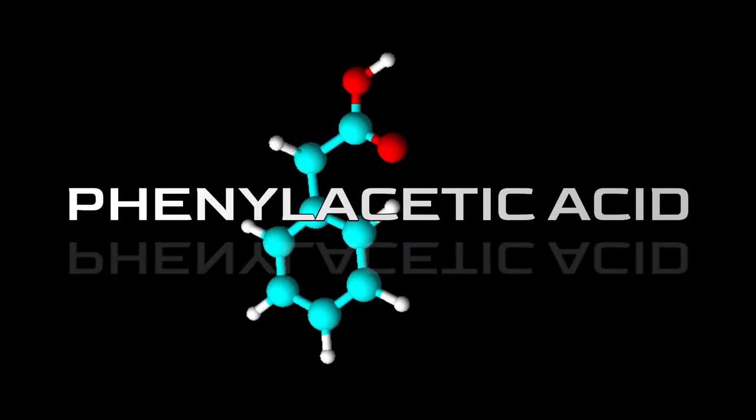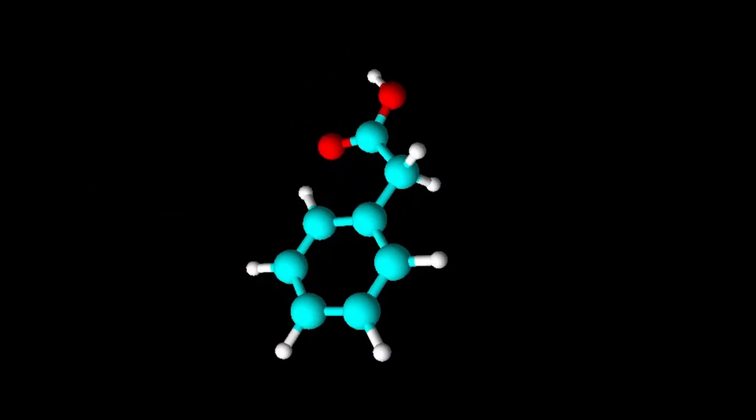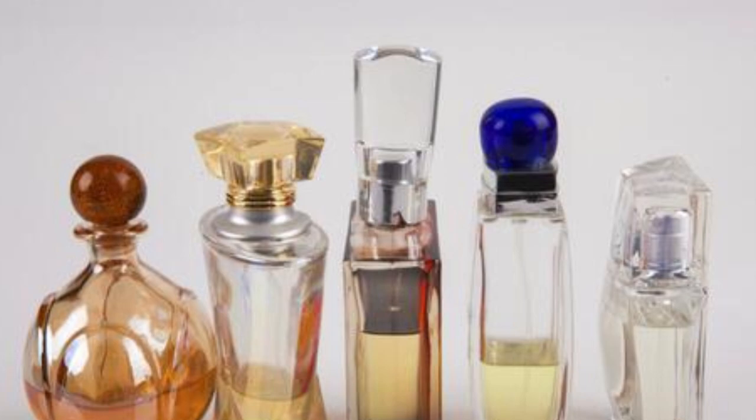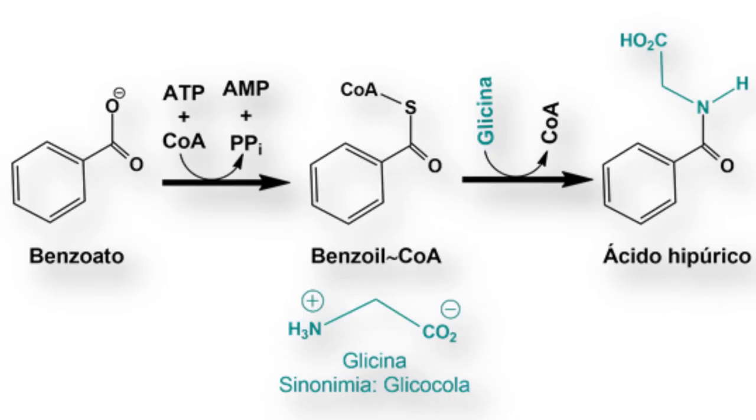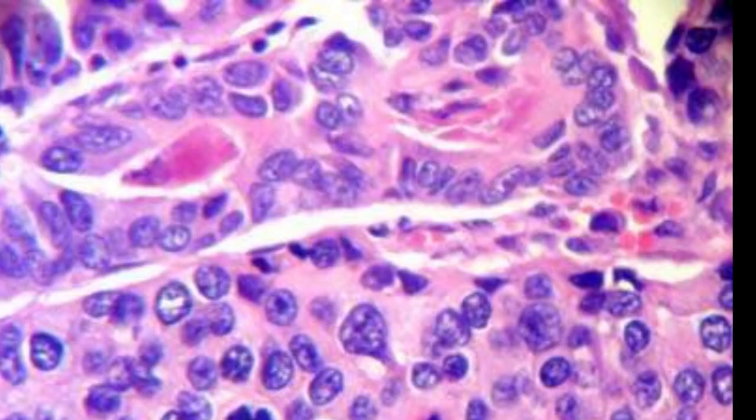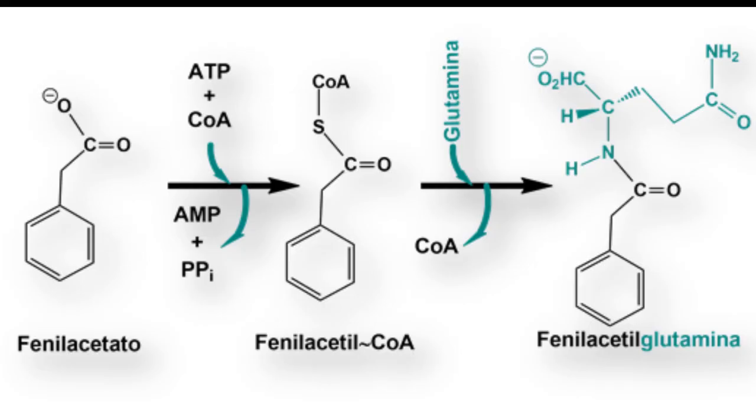In this video we are to obtain phenylacetic acid. Phenylacetic acid is used in perfumery, in the production of penicillin, and combined with sodium benzoate in the treatment of type 2 hyperaminemia to form phenylacetylglutamine, which can be naturally secreted by the patient.